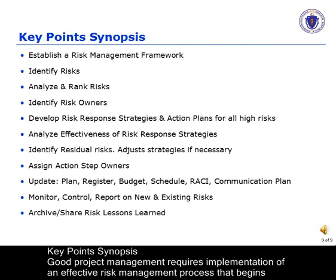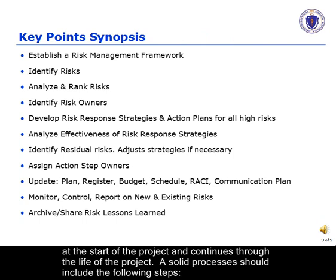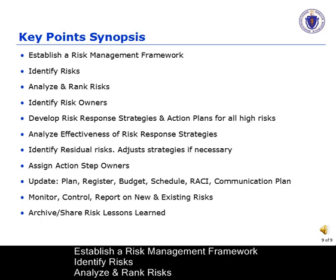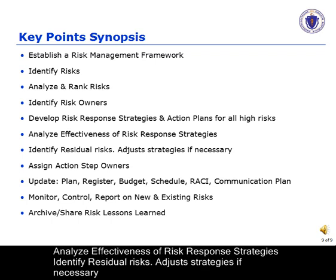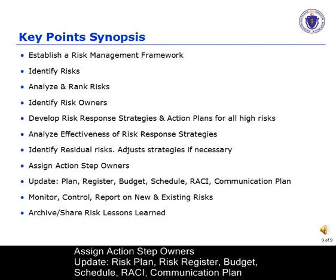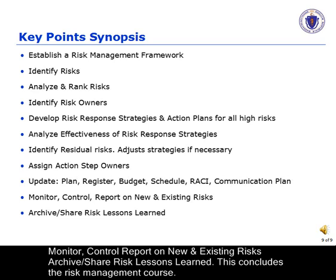Key Points Synopsis. Good project management requires implementation of an effective risk management process that begins at the start of the project and continues through the life of the project. A solid process should include the following steps: establish a risk management framework; identify risks; analyze and rank risks; identify risk owners; develop risk response strategies and action plans for all high risks; analyze effectiveness of risk response strategies; identify residual risks; adjust strategies if necessary; assign action step owners; update risk plan, risk register, budget, schedule, RACI, and communication plan; monitor, control, and report on new and existing risks; archive; and share risk lessons learned. This concludes the risk management course.